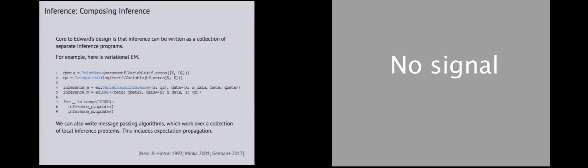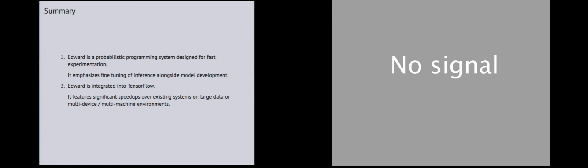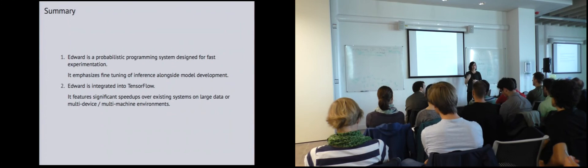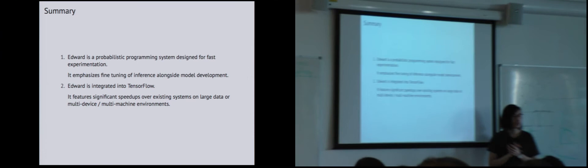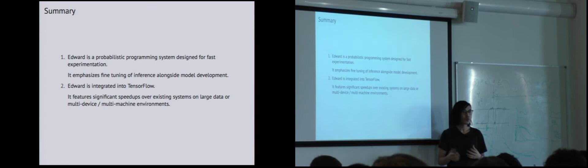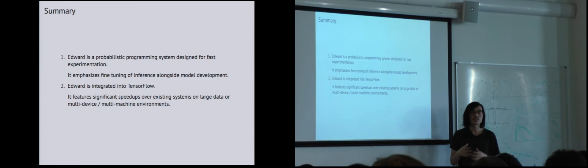As a summary, Edward is a probabilistic programming system designed for experimentation. We really wanted to build a system on TensorFlow to make probabilistic programming practical. There have been a lot of theoretical and methodological developments, and we wanted to make something concrete — motivated from Gaussian process software and BUGS and Stan — that integrated the methodological developments of probabilistic programming. It emphasizes not just fine-tuning of the model, but allowing you to play around within the inference algorithms themselves for larger-scale or very complicated models. At Google, we've been trying to employ these things on products at the scale of billions of users and many sparse features.